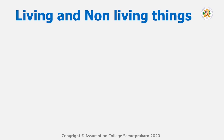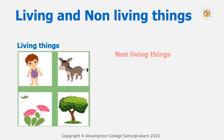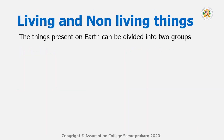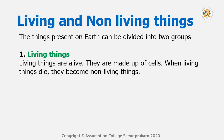As I told you, things around us on the earth — we can group them into two things: living and non-living things. Things present on earth can be divided into two groups. The first group is living things. Living things are things that are alive. They are made up of cells. When living things die, they become non-living things. The key word of living things is 'alive.'